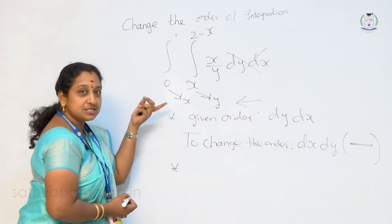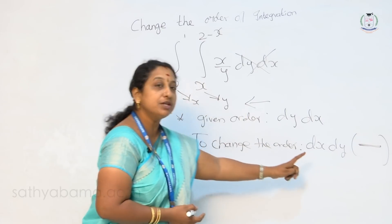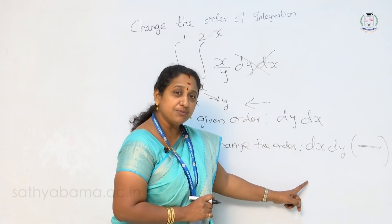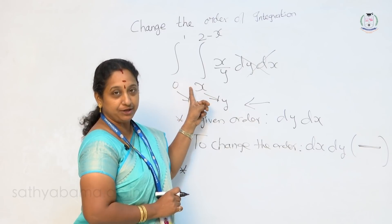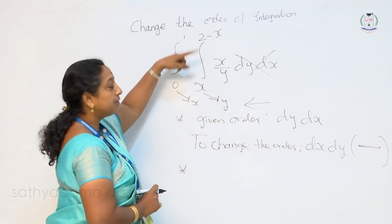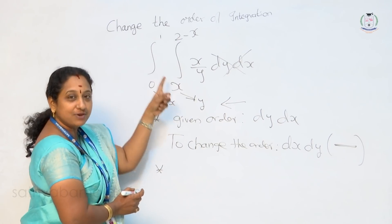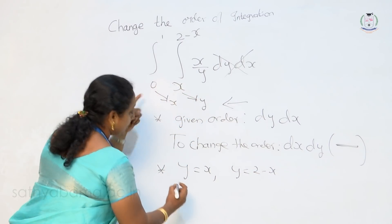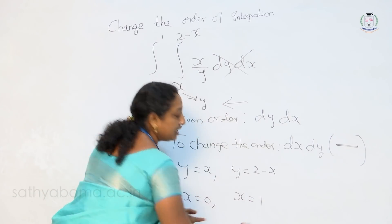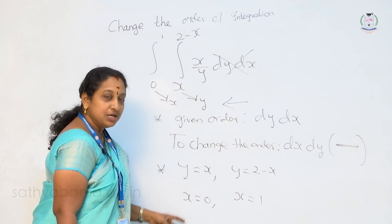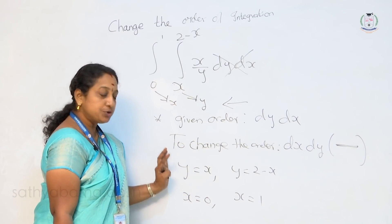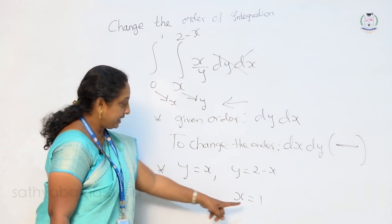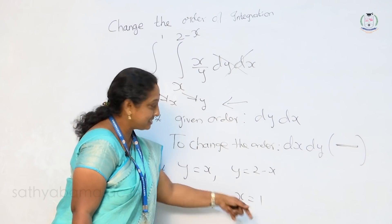Second step: for the corresponding order, we have to find new limits. To find the new limits, first we are supposed to identify the bounded region. From the given region only, we may find out the limits for the new order. Write out the given region. Already we identified these two are the limits for y. Therefore y is equal to x, y is equal to 2 minus x, and they are running from x is equal to 0 to x is equal to 1. These are the given regions.